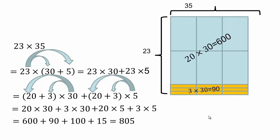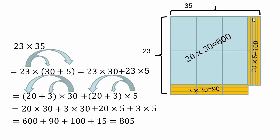Let's do a visualization of that same thing. So we have 20 times 30 here — that's the 600. We have 3 times 30, which is the 90. That gives us the 23 times 30, the first part. Now let's look at 23 times 5: 20 times 5 is this part here, and 3 times 5 is the 15 over here. Distributive property allows us to visualize it, or you can do it algebraically.